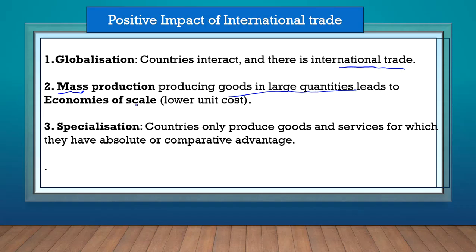Economies of scale means that the more you produce, the cheaper things become. Think of it this way: if you wanted to buy a pizza on your own, maybe you couldn't afford it, but if you split it with three friends, you can afford it because the unit cost becomes low. It's the same with production — the more you produce, the cheaper it becomes. Third, specialization: as a result of international trade, countries only produce goods and services for which they have absolute or comparative advantage.